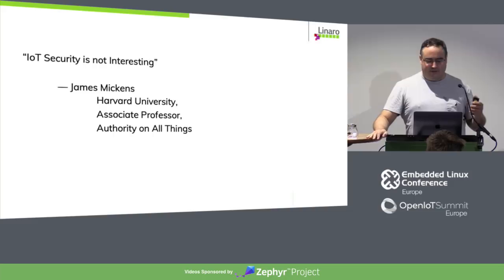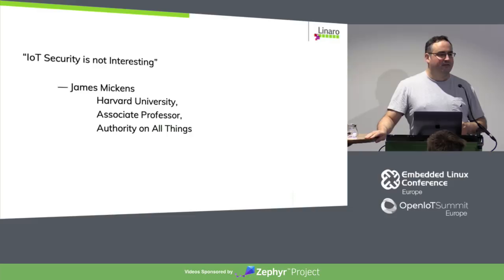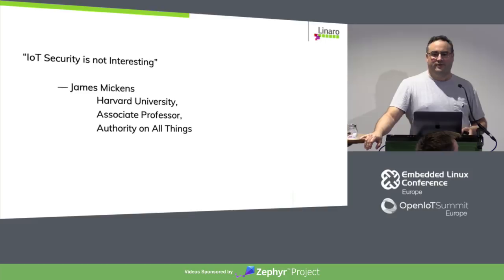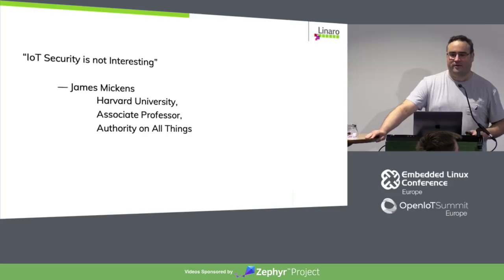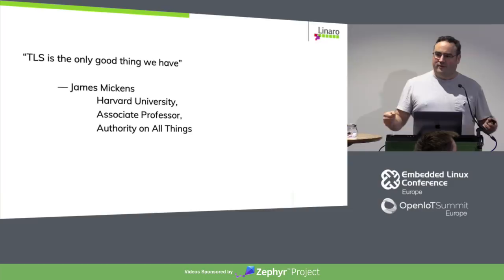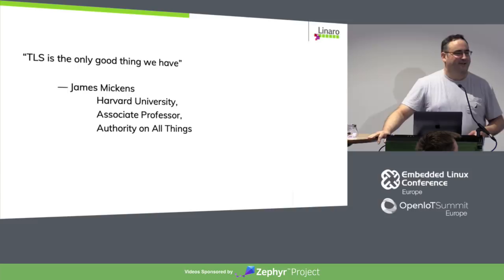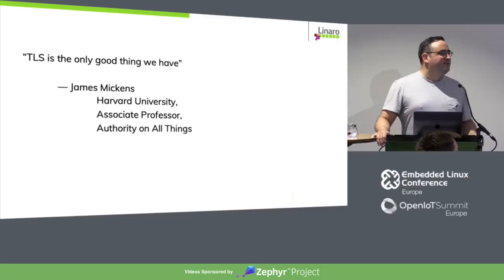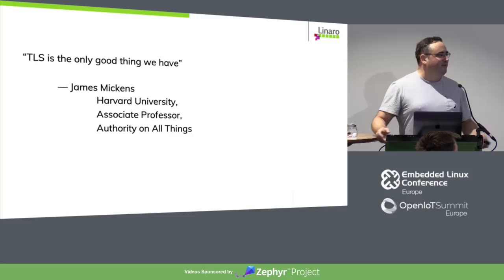I don't know if you know who James Mickens is. He gave a keynote talk at a recent USENIX security summit, and his comment was that IoT security is not interesting. His reason was that there's nothing different about IoT — we've learned things over the past 20-30 years about how to do security and we should just do the same things. I don't necessarily agree with him, hence the point of this talk. But he also says that TLS is the only good thing that we have — the idea being we have a solution, we just need to know how to do it. The IoT space brings in a lot of developers used to devices that aren't connected to anything, and now we need to learn how to do this right.